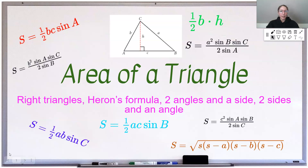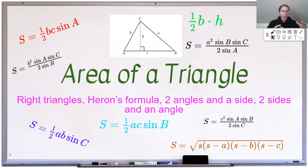So if you're given a right triangle, we're going to talk about Heron's formula. If you have two angles and a side of a triangle, if you have two sides and an angle of a triangle — you can see all the formulas floating around here that we're going to use. After we're done with this video, you should be able to get any triangle given to you, whether it's a right triangle or not, and be able to calculate its area.